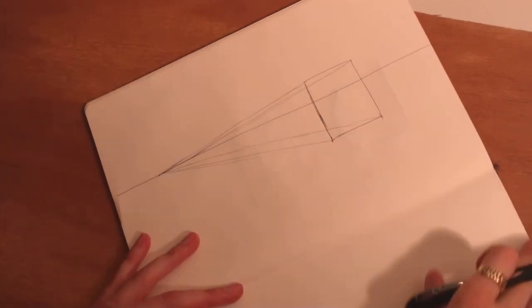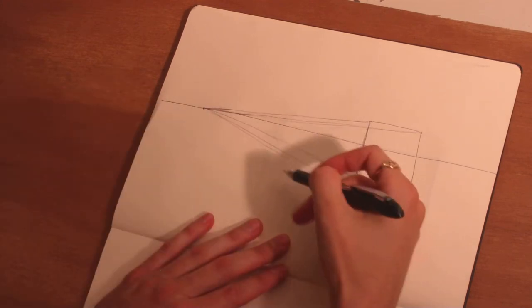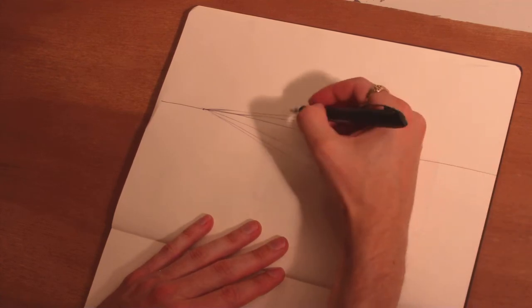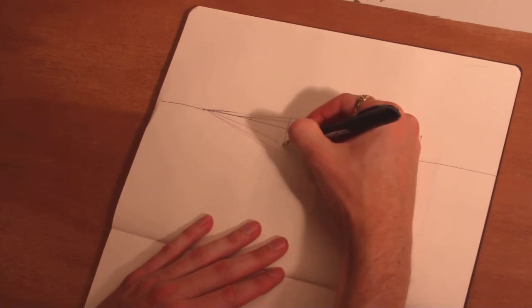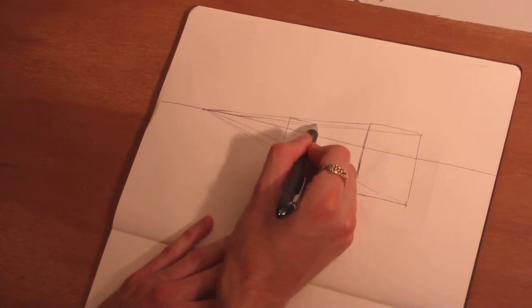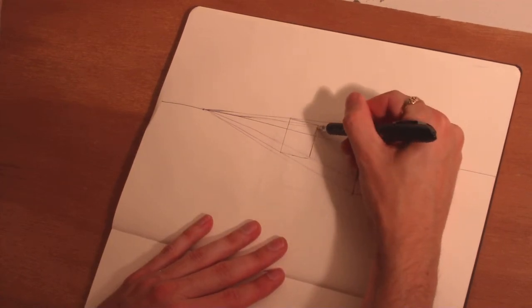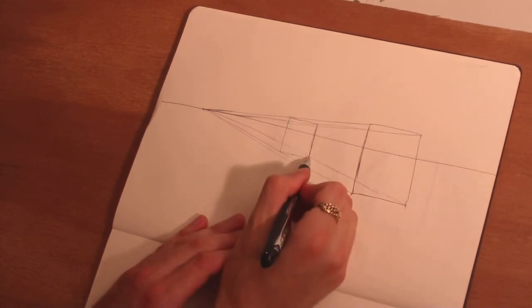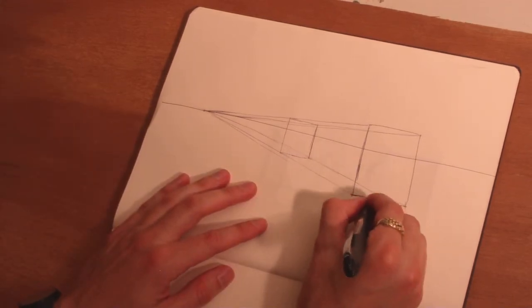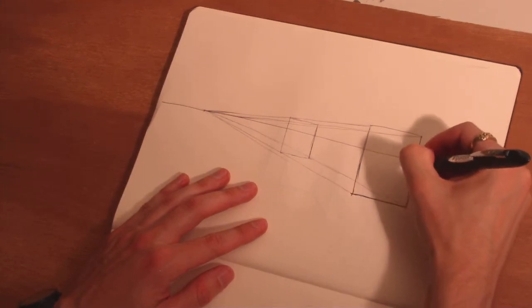So now we've got our four receding planes and our front plane. Then we're going to do exactly what we did before—we're going to make our planes connect back. Alright, so we've drawn this sort of rushing rectangular solid.